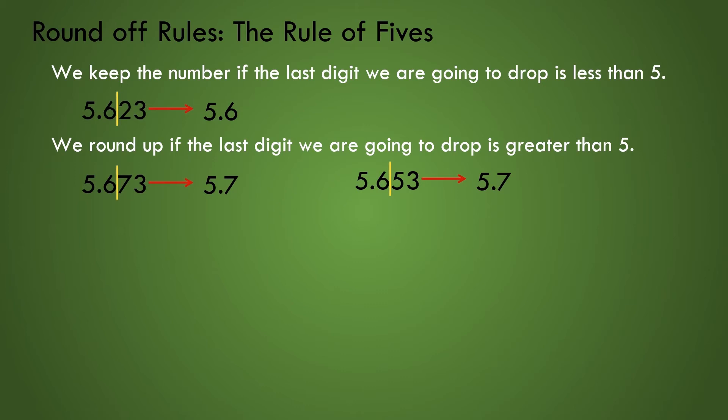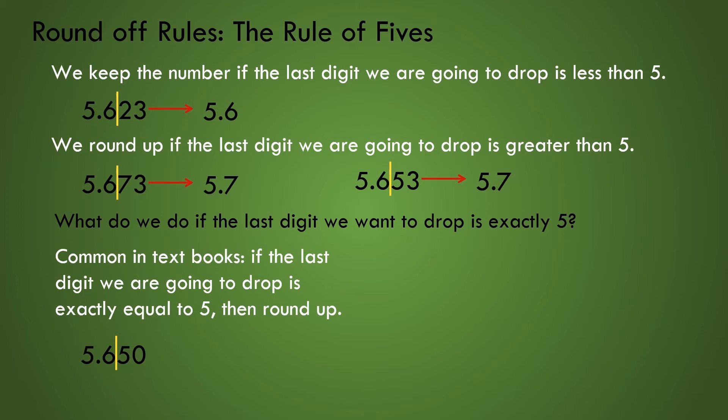This brings up the most confusing example in the rule for rounding that we have. What do we do if the last digit we want to drop is exactly 5? For example, what if we want to round off 5.65 to the tenths place? We now see that 0.05 is exactly in the middle of the value 5.6 and 5.7. Most introductory textbooks follow the rule that if the last digit we are going to drop is exactly equal to 5, then round up. Utilizing this rule, we would round the number to 5.7. For most of what we do, we will use this rounding rule.